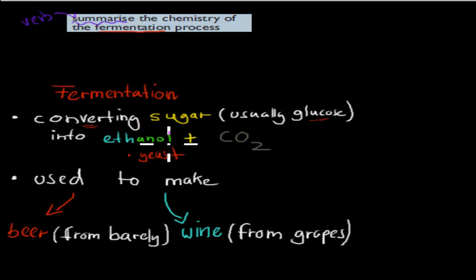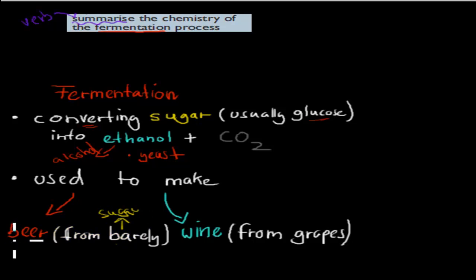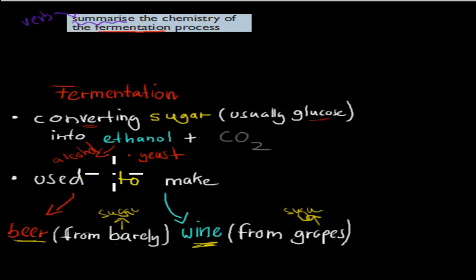The reason why we want to produce ethanol is because ethanol is an alcohol and we can use it to make beer or wine. For example, when we ferment the sugar from barley we can produce beer, and if we ferment the sugar from grapes we can make wine. So these are reasons why people, for many thousands of years, have fermented barley and grapes to make beer and wine respectively.